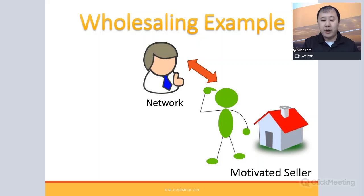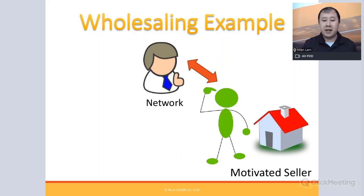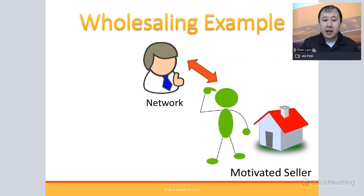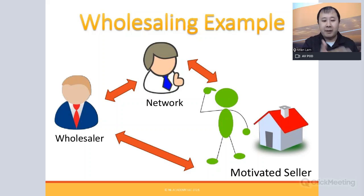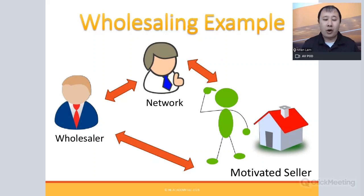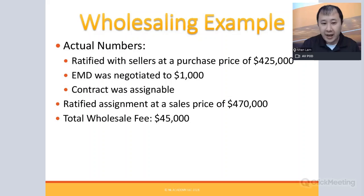A real estate agent in my network had this motivated seller, but the seller didn't want to pay a 6% commission. The agent connected me to the seller directly, I did a deal with no real estate commission, and after closing we paid the agent a marketing consulting fee for the lead. The numbers: we ratified with the seller at a purchase price of $425,000, negotiated the EMD to $1,000, made the contract assignable, and ratified an assignment at a sales price of $470,000.